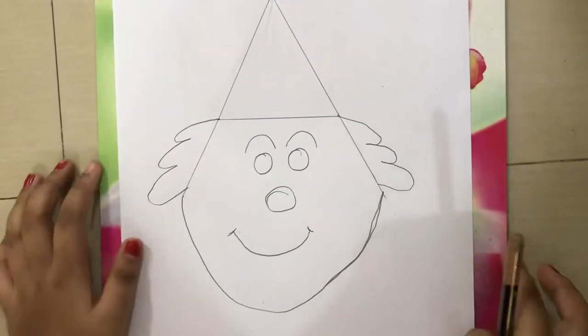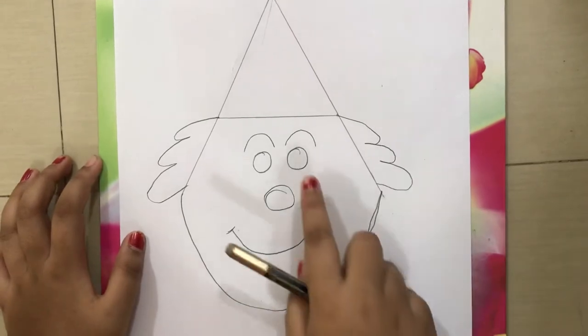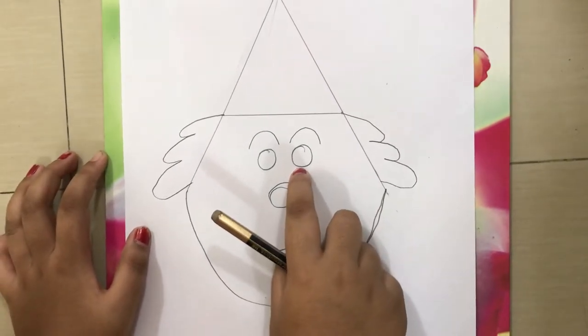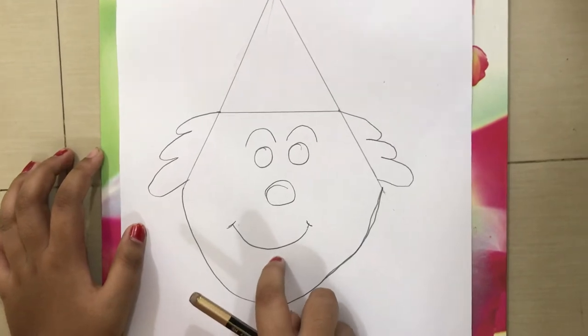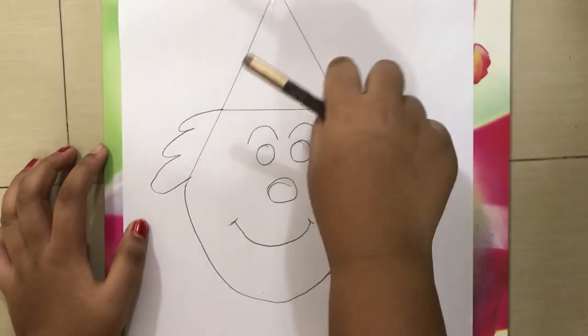Step 5, I am going to draw the black things in the eyes, and I am going to draw the lips and the lines over here.